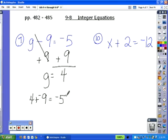Number 10. Since we're adding 2 in the equation, we'll have to subtract 2. So the plus 2 and minus 2 cancel each other out on the left, and we're left with x equals. But we also have to subtract 2 on the right.